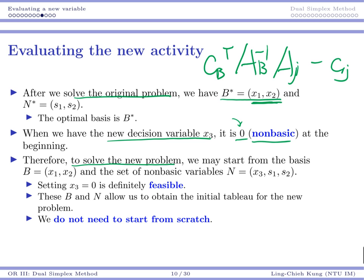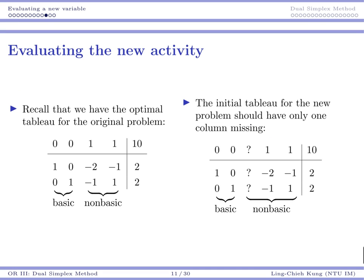So to solve the new problem, we start from the basis x1, x2. And the set of non-basic variables now is expanded to include x3. So we are having a basic feasible solution. All we need to do is to use this B and N to calculate our CB transpose AB inverse AJ minus CJ, where J means 3, because in this particular example it's x3. And then pretty much we know how to do this. We don't need to do the things from scratch.